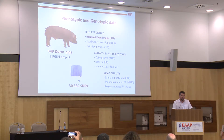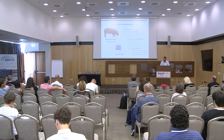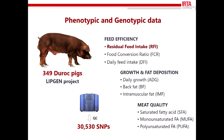For our study we used phenotypic and genotypic data generated in Spain during the LibGen project. Basically we used 349 Duroc pigs, and for all those pigs we have several phenotypes related with traits associated with feed efficiency, growth, fat deposition, and meat quality as well. In today's presentation we use only 11 traits, and for the genotype information coming from the 60K chip, after quality control we used almost 31,000 markers.